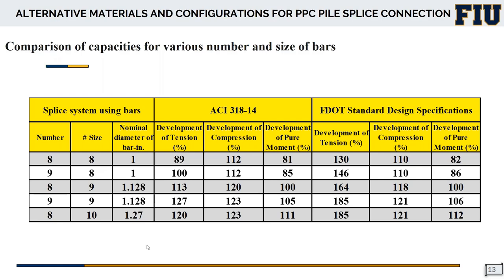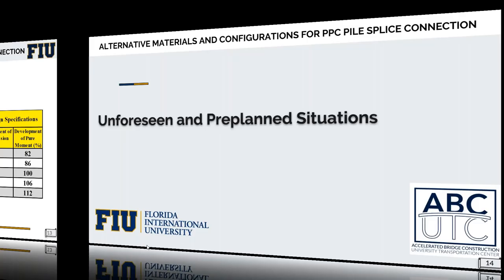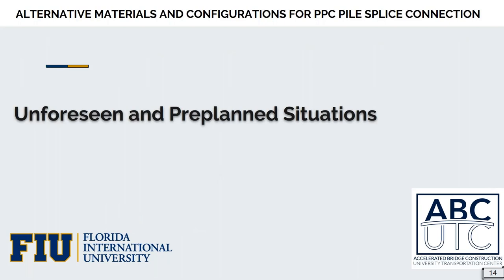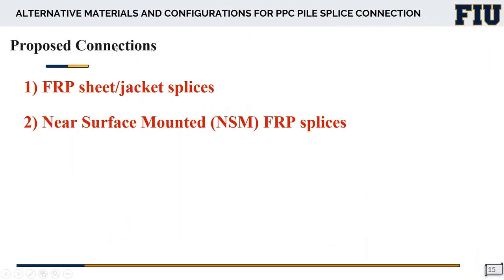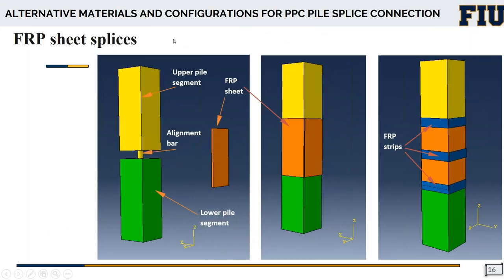For unforeseen situations where we didn't know splicing was needed, most available connection types cannot develop the full pile capacity because there is no preparation in the lower segment. For unforeseen — and also pre-planned — situations, we suggested two types of connections using FRP, fiber-reinforced polymers: one using FRP sheets or jackets for splicing, and another using near-surface mounted FRP bars for splicing.